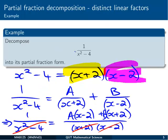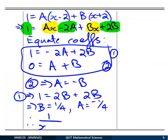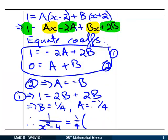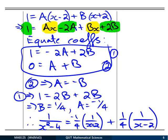So therefore our original fraction, 1/(x²-4), can be rewritten as: -1/4 times 1/(x+2) plus 1/4 times 1/(x-2).